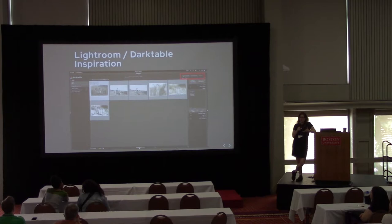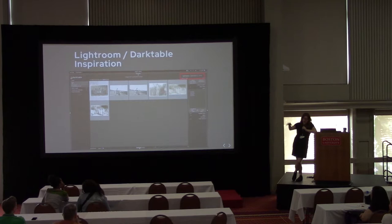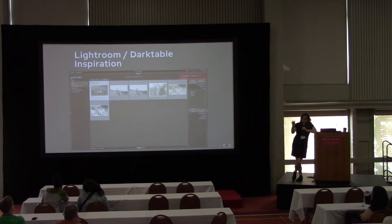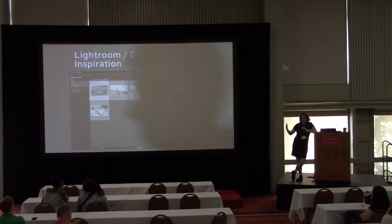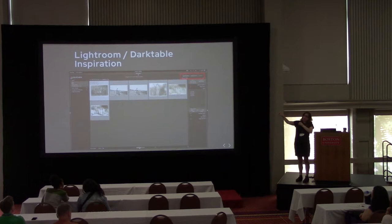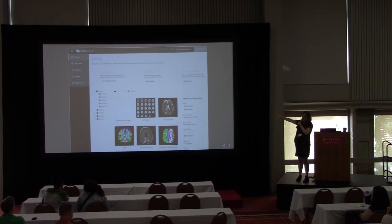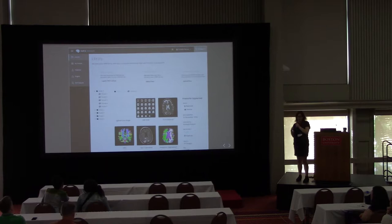With Lightroom and Darktable — both tools that process raw images from a camera — the thing we took is that they separate the process into stages. There's a stage where you're hunting and gathering images to process. We have to do something similar with CRIS: you have the PACS server, or images you're uploading directly, or images from a study image set. You have to hunt and gather which images you'll actually run analysis on, and it's a distinct stage requiring different tools. Darktable calls it a light table, Lightroom calls it a library, so we adapted that term and split it out into stages.